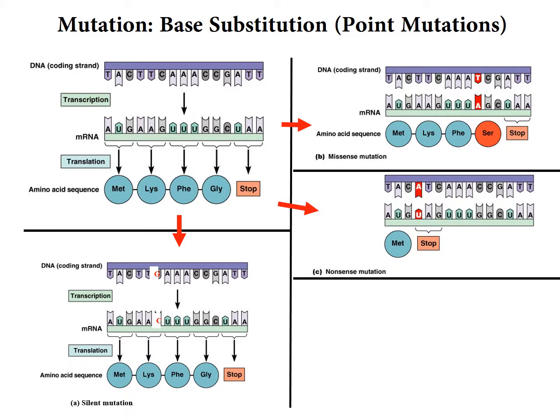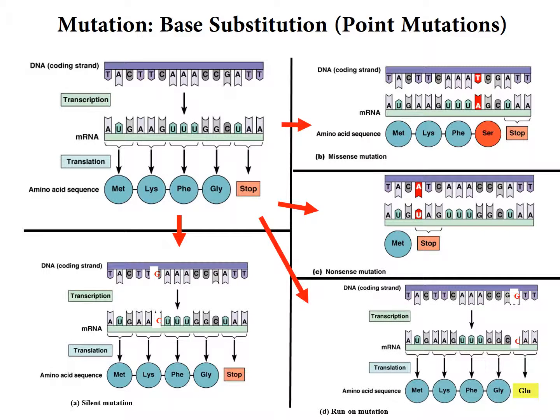You can also have a nonsense mutation, where the mutation causes a change to a stop codon, resulting in a shorter protein. And you can have a run-on mutation, where a mutation in the stop codon changes it to an amino acid codon, meaning the information will continue to be read beyond where it should stop — that is why it is called a run-on mutation.